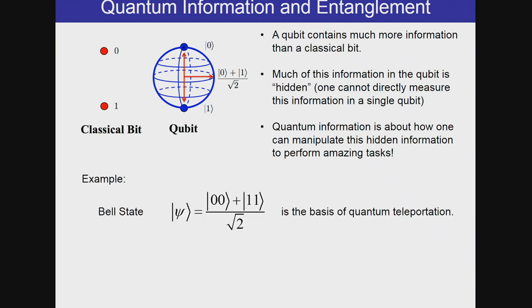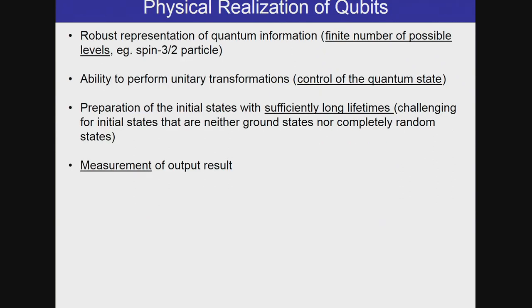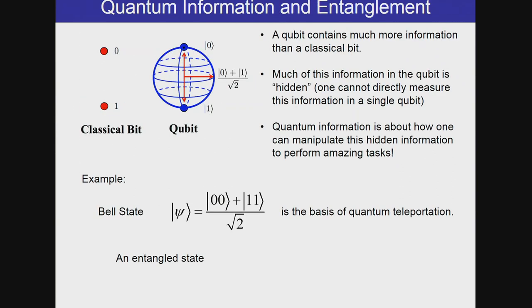So quantum information is about how one can manipulate this hidden information to perform amazing tasks. So one example here is the Bell state, which is the basis of quantum teleportation. The Bell state is what one might call an entangled state because you can't factorize it into a direct product of two different states. So that's the entanglement in your title.